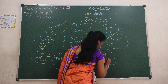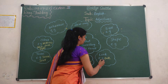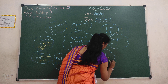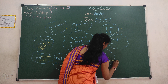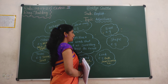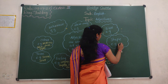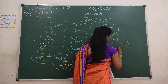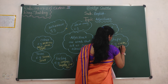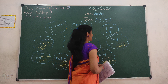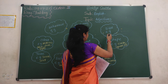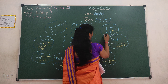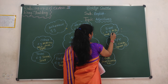Look: tall, short, beautiful. Shape: circle, square. Size: big, small, large.